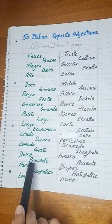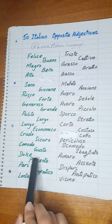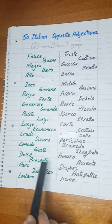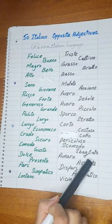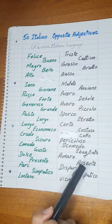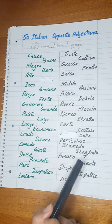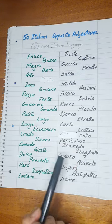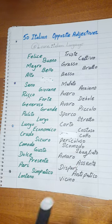Next is Giusto. Giusto means right. The opposite of Giusto is Sbagliato. Sbagliato means wrong. Giusto — right. Sbagliato — wrong.